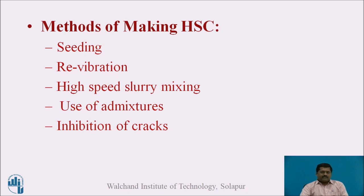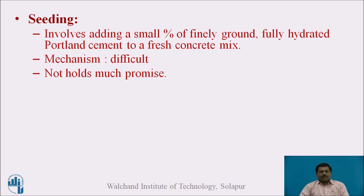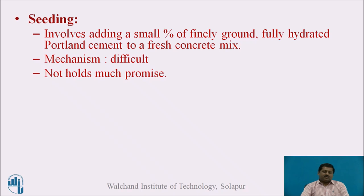Let us see the methods of making high-strength concrete. The first method is seeding. Seeding means a fully hydrated cement, which is finely ground, is added into the fresh concrete mix. However, the mechanism is difficult and the seeding method is not a very promising method for producing high-strength concrete, though it is used.